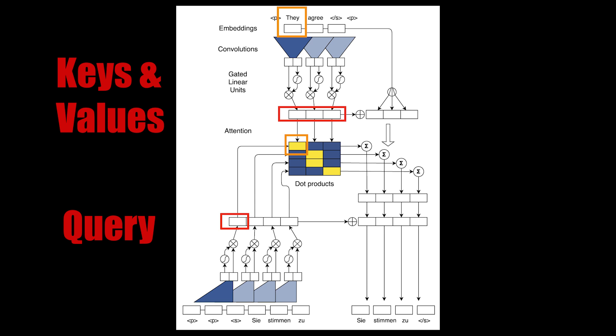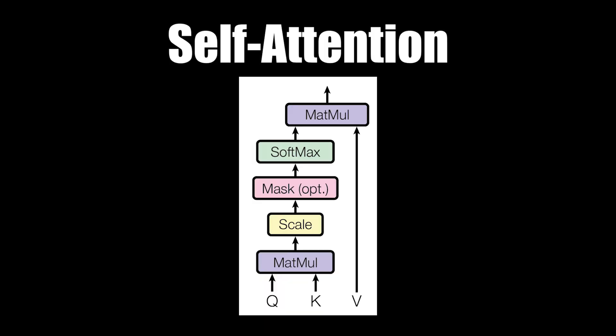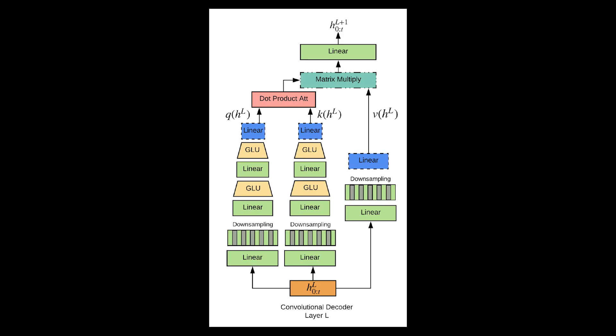For self-attention, queries, keys, and values come from the same source, but are applied to different linear operations. In this paper, self-attention is used for connecting the convolutional layers in the decoder. These three components are all from the hidden states of the decoder. The queries and the keys pass through several fully connected layers, down sampling layers, and gating linear units, whereas fewer operations were applied on the values. I will explain why there are down sampling layers later in this video. The keys and the queries are dot product and softmax to form a weighted distribution for the values. The weighted values will be the input for the next convolutional layer.